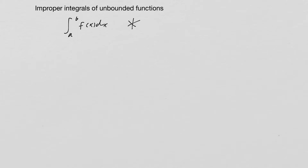Hello and welcome. Today we're going to be talking about improper integrals of unbounded functions. One thing to focus on is that when we have an integral from a to b of f of x dx, the really big note here is that f must be continuous on [a, b], using those square brackets, which means a and b are both included.